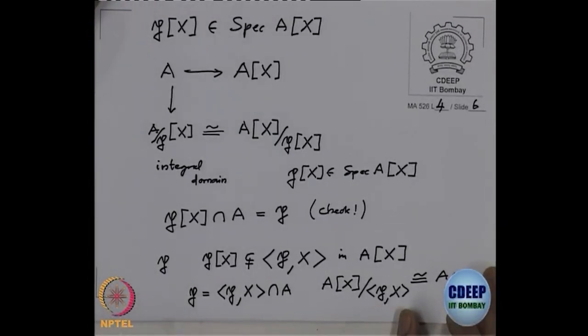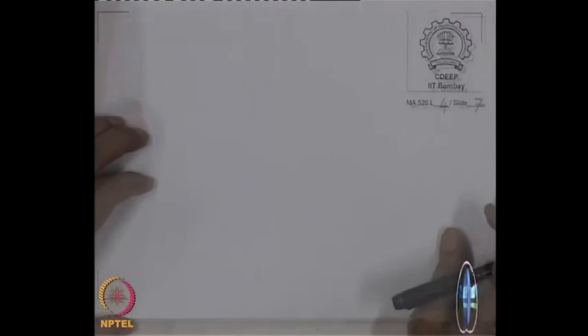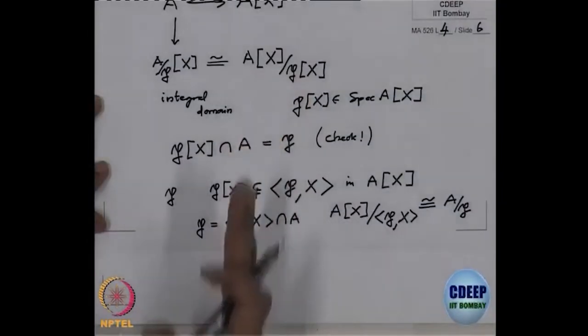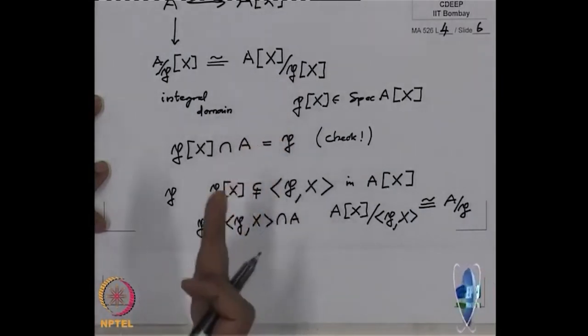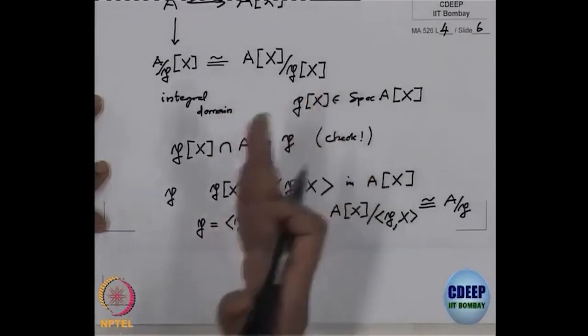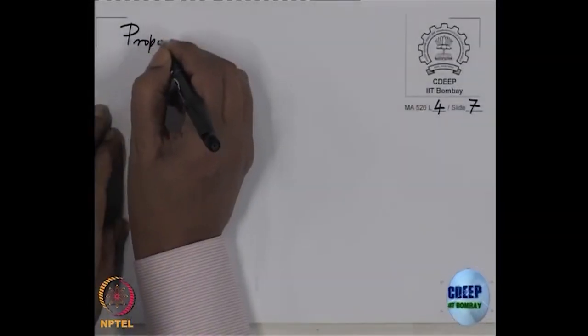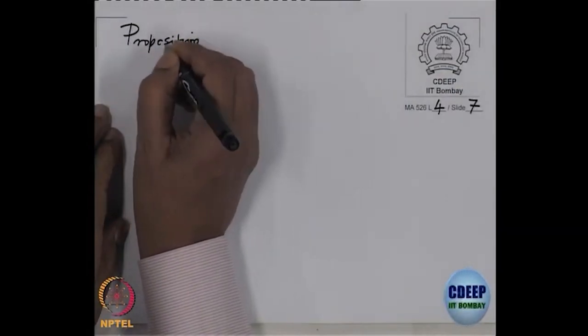I want to analyze what happens to the heights. We have just noted that P[X] ⊊ (P,X) is a proper chain. How many prime ideals are there in between? I want to analyze the relation between the heights. Let us write it as a proposition.